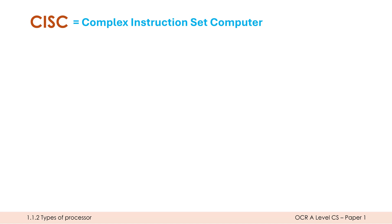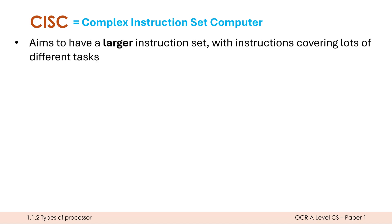CISC, on the other hand, stands for Complex Instruction Set Computer. It aims to have a larger instruction set with many more options available, covering lots of different tasks. Again there is no magic number, but we're typically talking a few hundred instructions, possibly up to one or two thousand instructions in total.